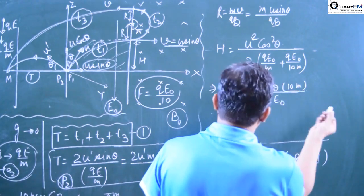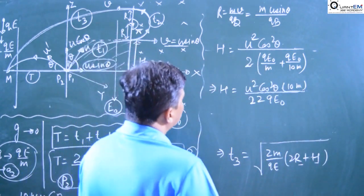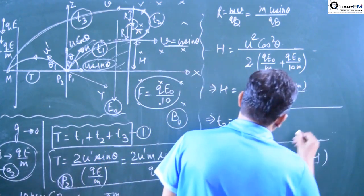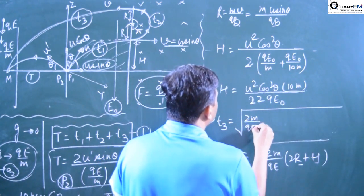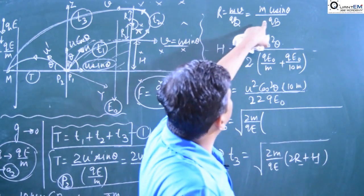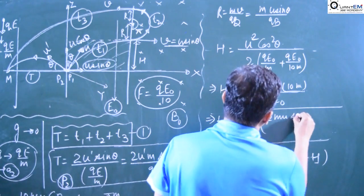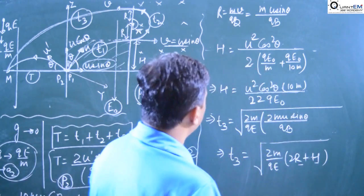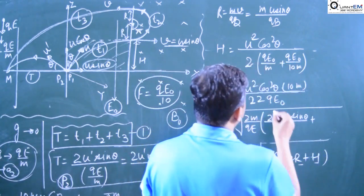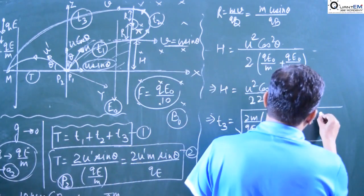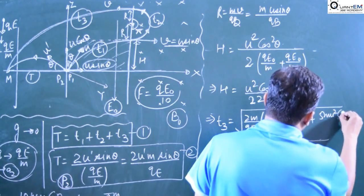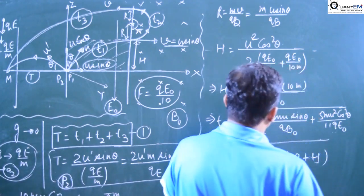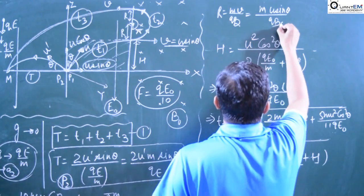So we have H = 5mU²·cos²θ / 11qE. We can simplify this further. Now putting these values: t3 = √(2m/qE · (R + H)) where R = mU·sinθ/qB and H = 5mU²·cos²θ/11qE. So t3 = √(2m/qE · (2mU·sinθ/qB + 5mU²cos²θ/11qE)). Note: replace E with E-naught and B with B-naught throughout.